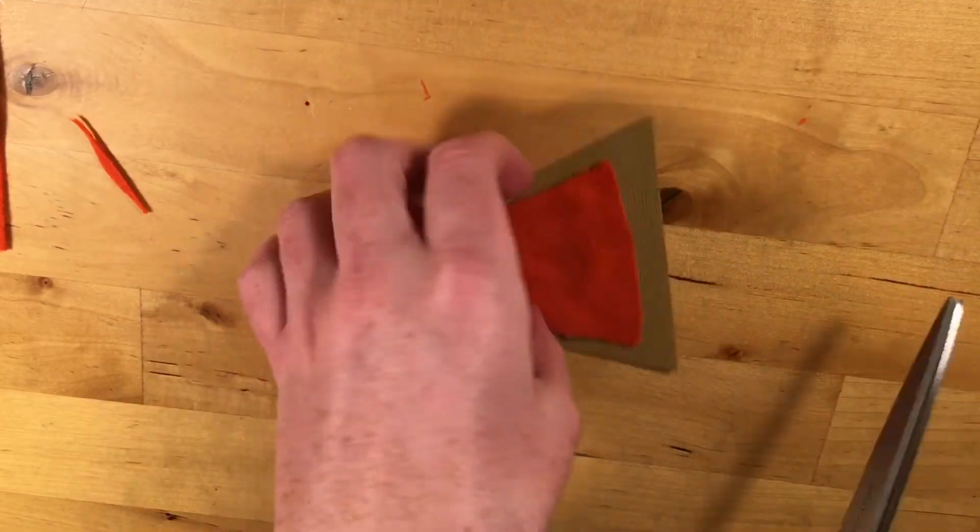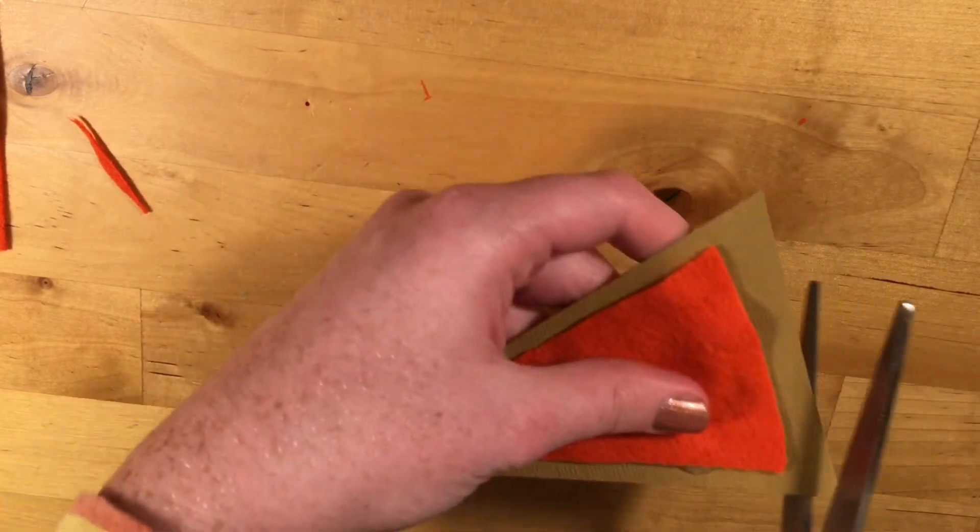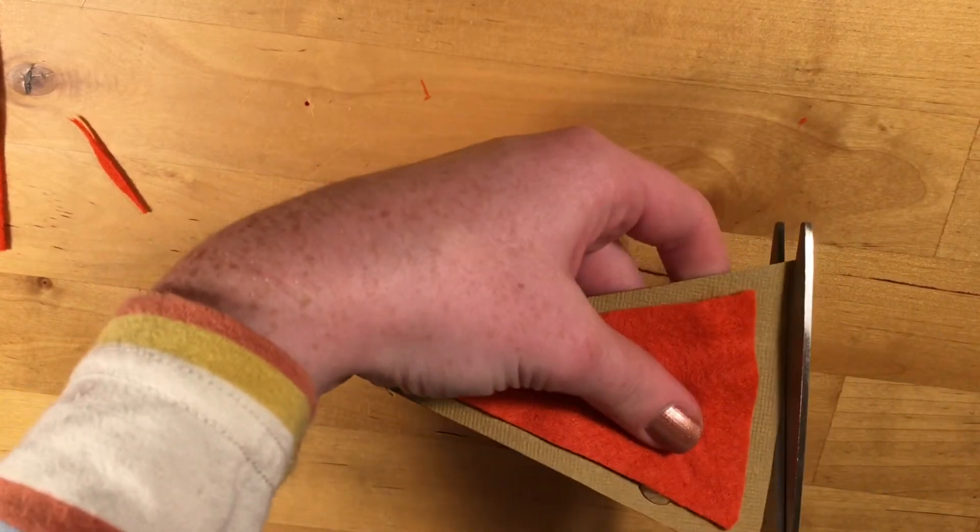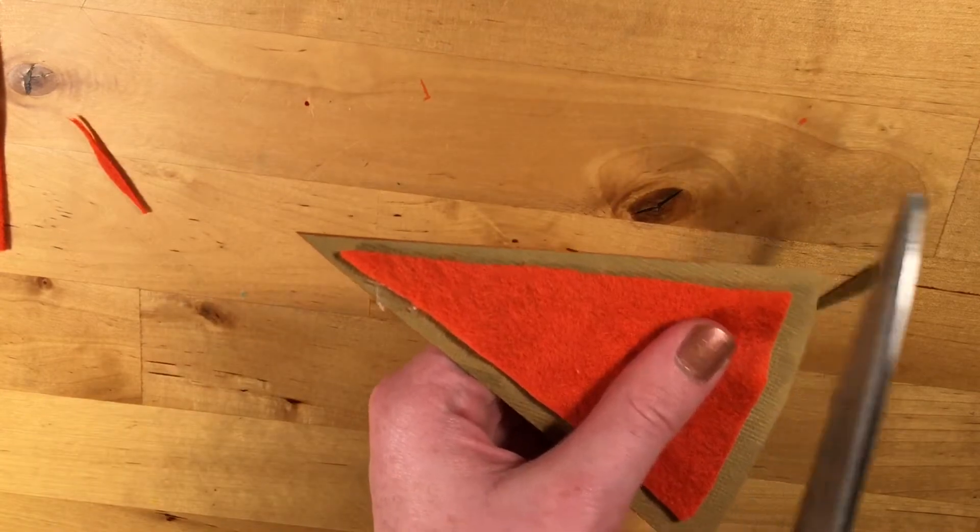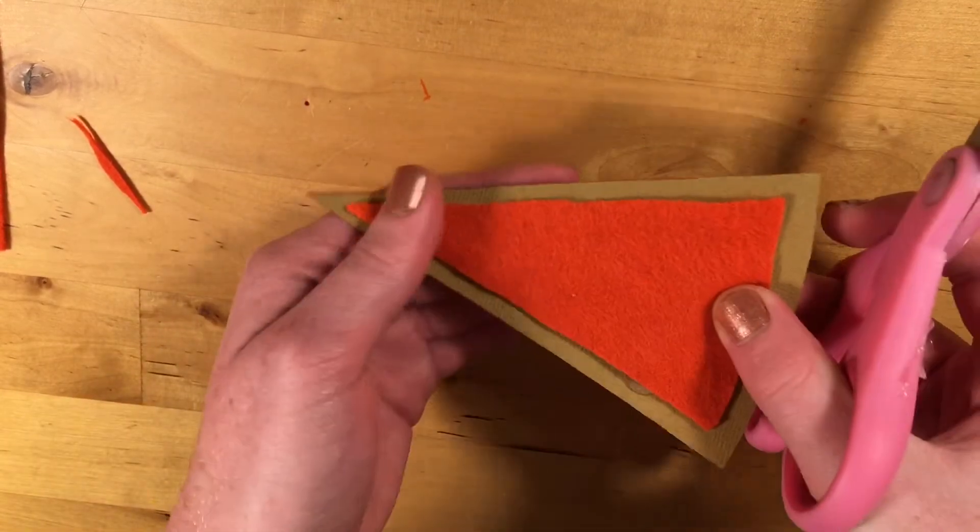And now what we're going to do is we're going to kind of round the edges of our pie, just to make it look like it was cut out of a circle and not out of a hexagon or something like that.